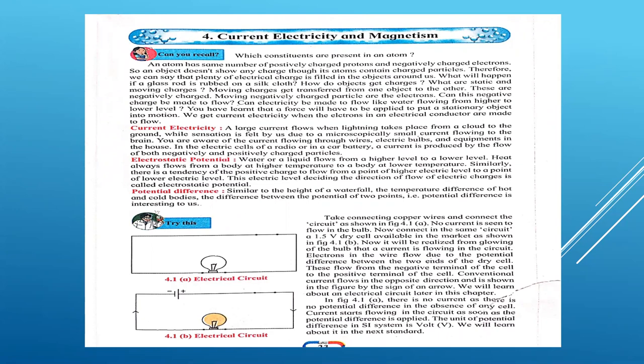If I ask you what are the constituents of an atom — first, what is an atom? An atom is the smallest part of an element, a tiny part of an element. If you see the structure of an atom, it looks like a solar planet. Like in the solar system, we have the sun in the center, and around that sun there is an orbit in which the other planets take revolution.